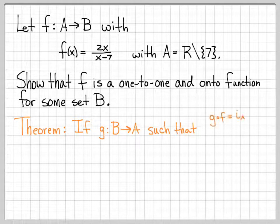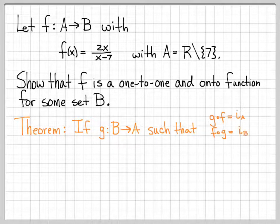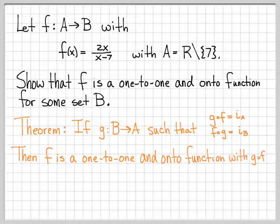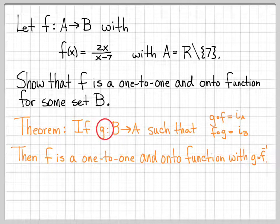This theorem is in almost every textbook. It says that if you can find a function g that goes from B to A with these properties — namely, g composed of f is the identity function on A, and f composed of g is the identity function on B — then f is a one-to-one and onto function.